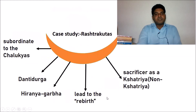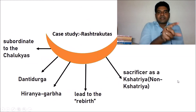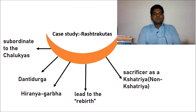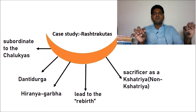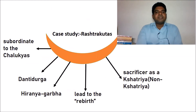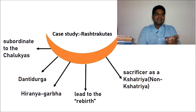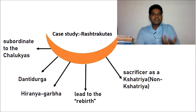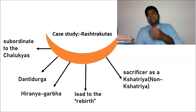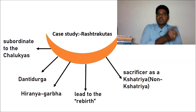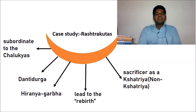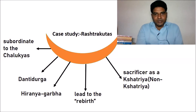Children can copy the mind map for the case study of Rashtrakutas. Write in small words so it is easy to remember: Rashtrakutas were subordinates to the Chalukyas; Danti Durga performed the Hiranyagarbha ritual; the ritual causes symbolic rebirth; a non-Kshatriya who performs this ritual is recognized as a Kshatriya.